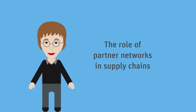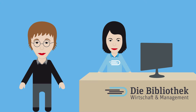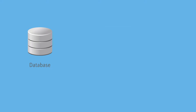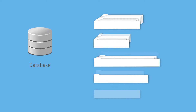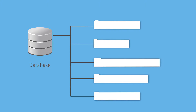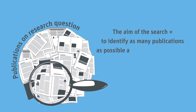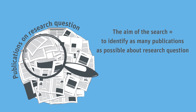To do so, she has to develop an appropriate research strategy. She goes to the Economics and Management Library to ask the librarian Ms. Müller for advice. Ms. Müller explains that bibliographical databases are the most important research instrument for compiling a systematic literature review, because of their clearly defined content and search options. The aim of the search is to identify as many publications as possible about her research question in the relevant databases.